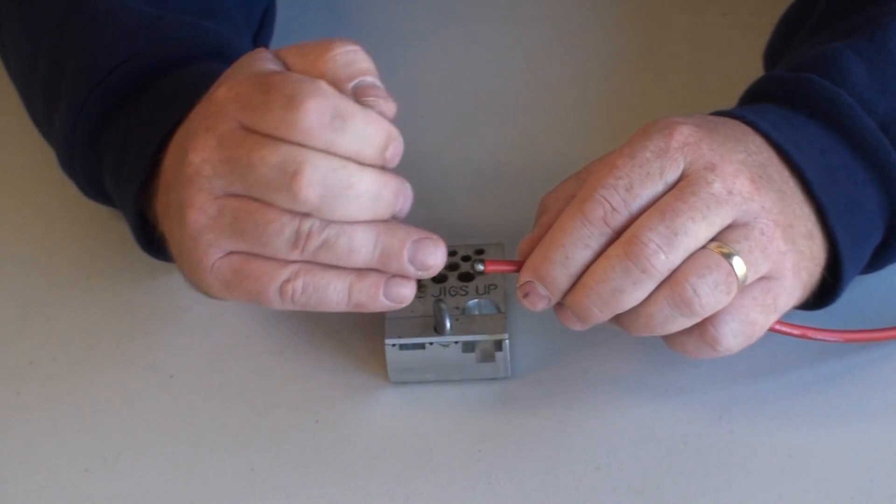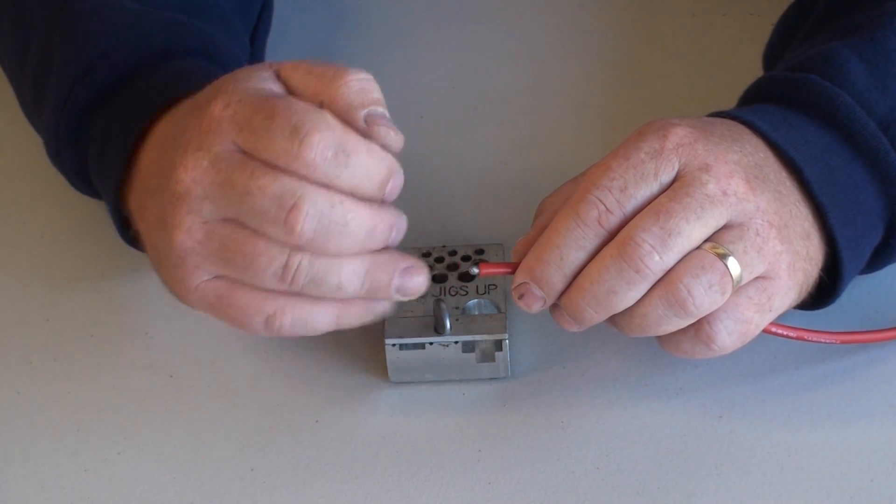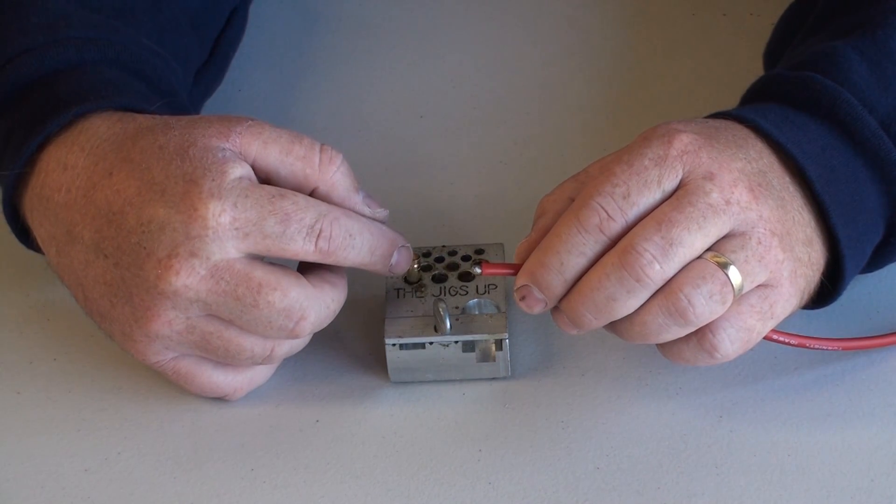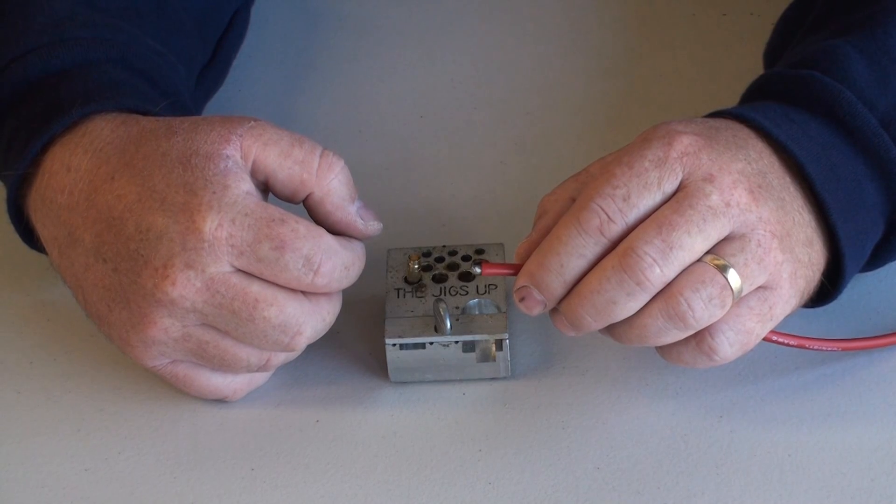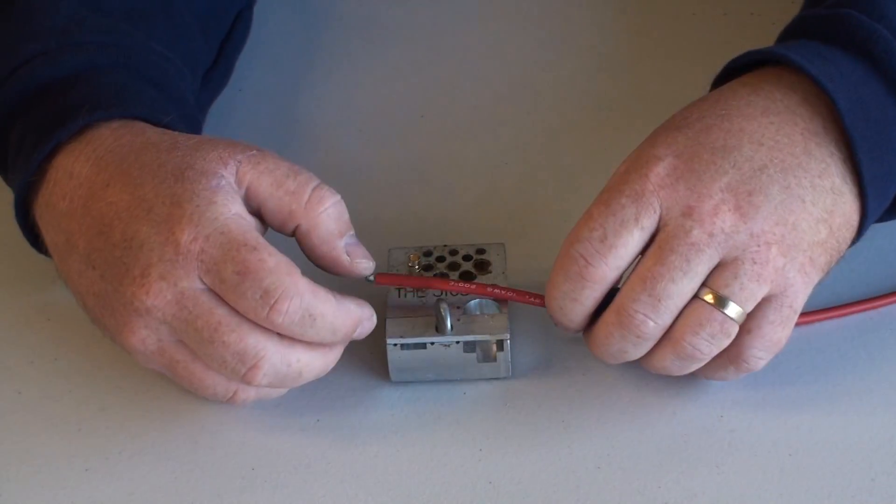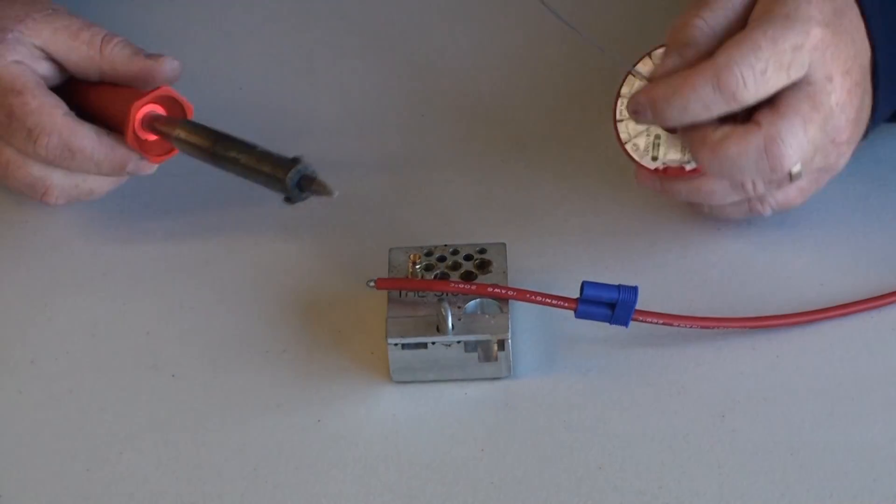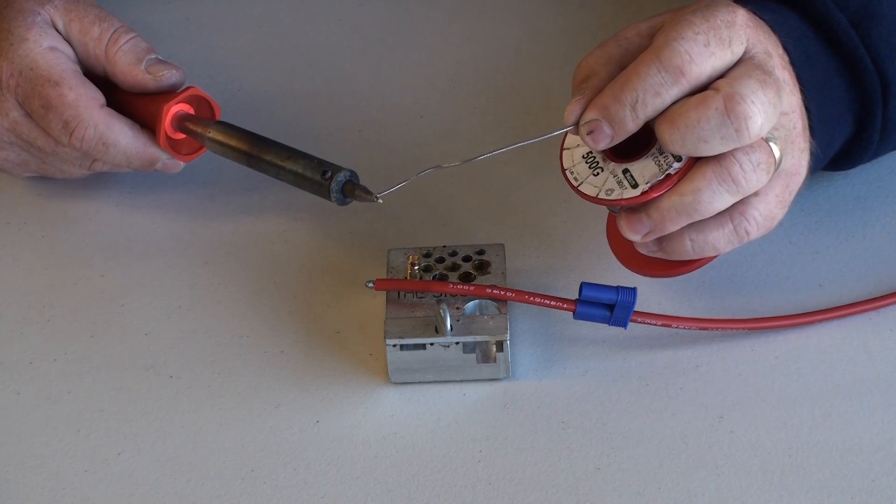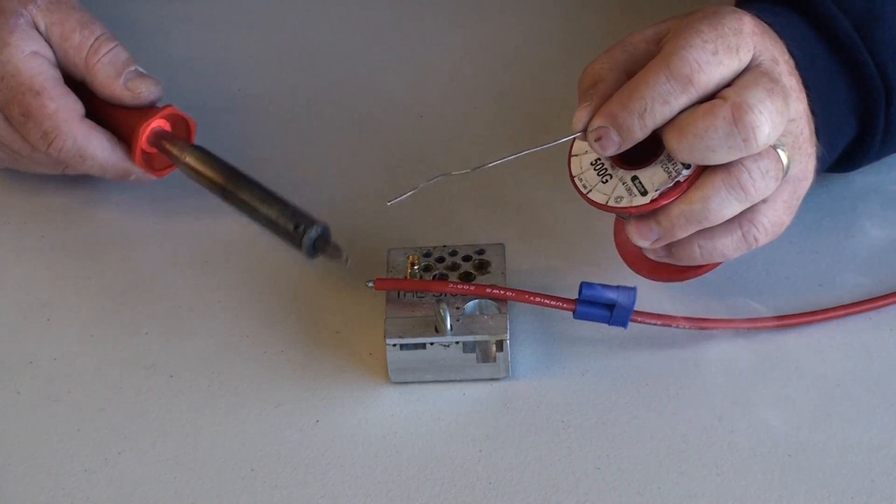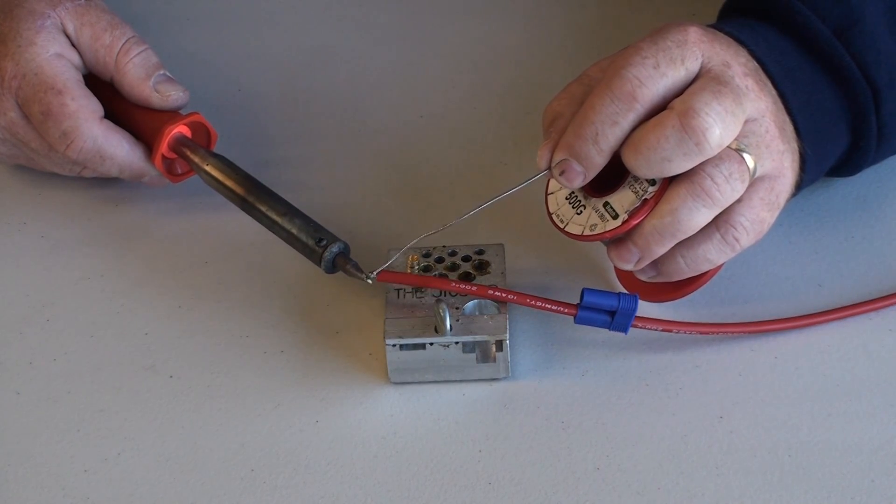Next, we want to tin both the exposed wire on the battery lead and the inside of the EC5. To do that, with your soldering iron, heat up the wire on the battery lead.